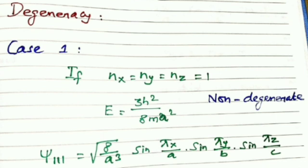Since this value has only one quantum state, it is non-degenerate. The corresponding wave function is ψ₁₁₁ = √(8/a³) · sin(πx/a) · sin(πy/b) · sin(πz/c). This is case number one.